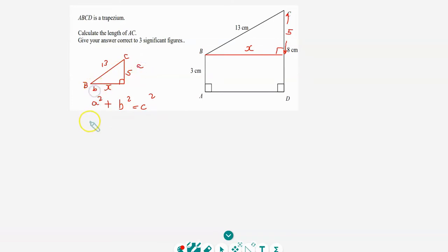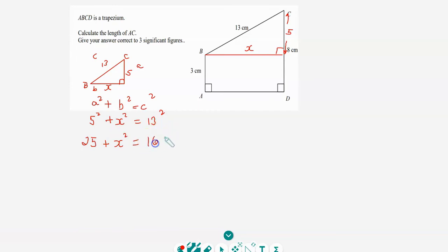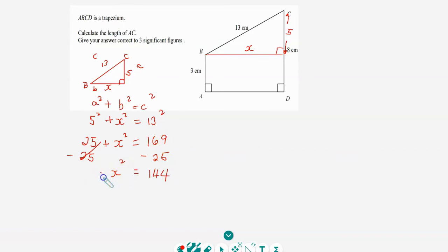So a is five and b is x, and c is 13. Five squared is 25, plus x², equals 13 squared which is 169. Subtracting 25 from both sides leaves x² = 169 minus 25, which equals 144. Taking the square root of both sides: the square root of x² is x, and the square root of 144 is 12. So side x is 12 centimeters.